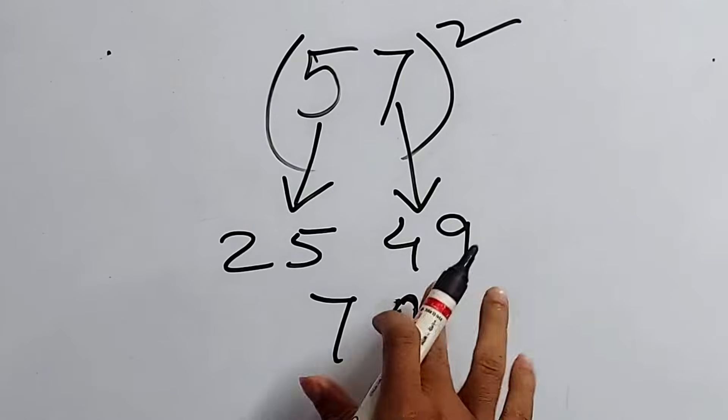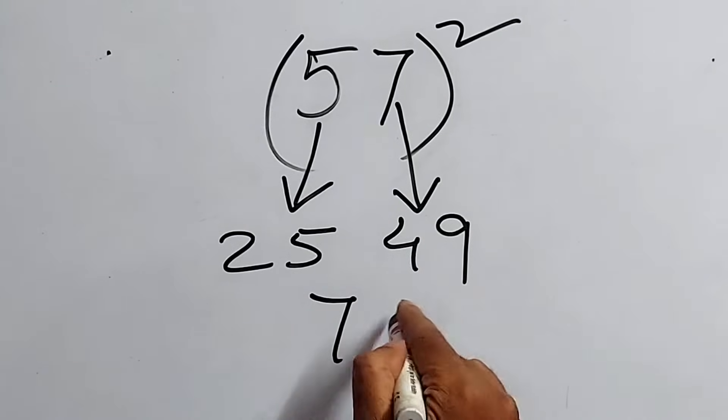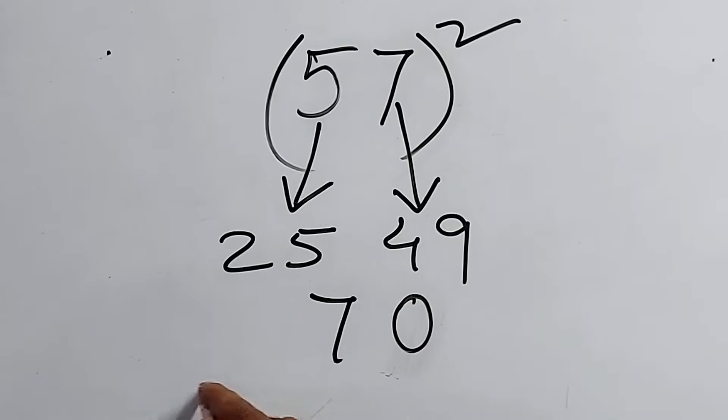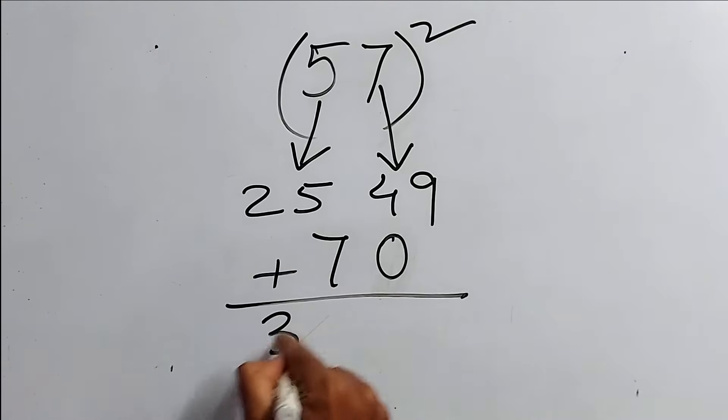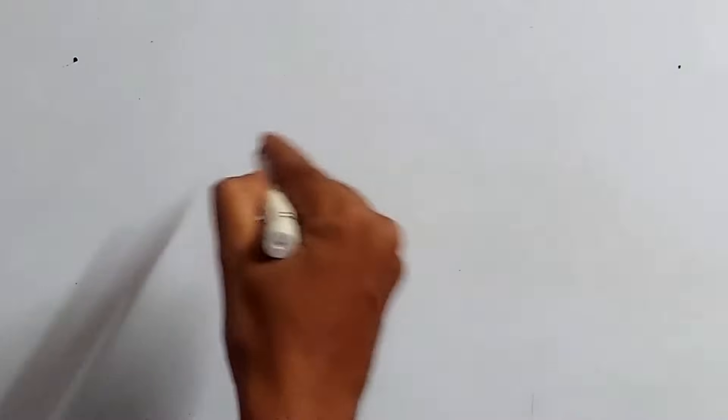Sorry for this. Extremely sorry for this. 70, right? And now, just add this 2. That's it. So, the final result will be 3, 2, 4, 9. You like this? Let's try the next one.